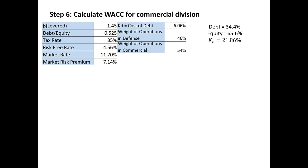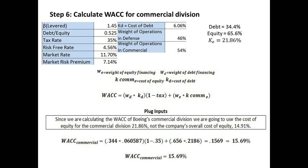The WACC formula is: weight of debt times cost of debt times (1 minus the tax rate), plus the weight of equity times the cost of equity for the commercial division. Since we are calculating the WACC of Boeing's commercial division, we use the commercial cost of equity of 21.86%, not the company's overall cost of equity of 14.91%. Plugging in our inputs, we find that Boeing's commercial division has a weighted average cost of capital of 15.69%. Since 15.69% is less than their expected internal rate of return of 17.32%, Boeing would invest in this project.